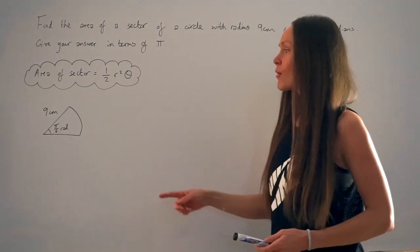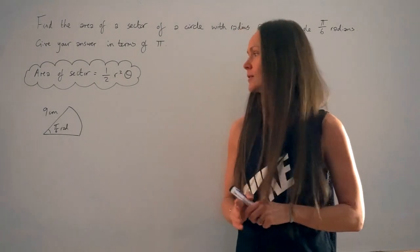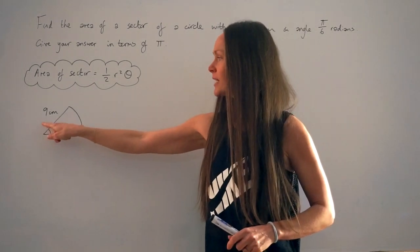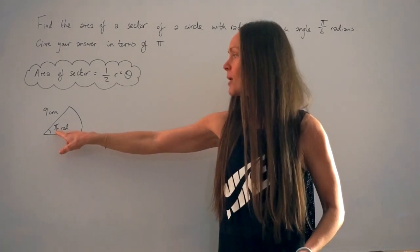So I've just done a rough sketch of the sector down here. Remember a sector is just a slice from a circle. The radius I've labeled here which is 9cm and the angle in radians is here, pi over 6.